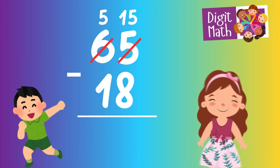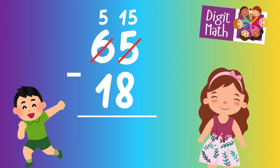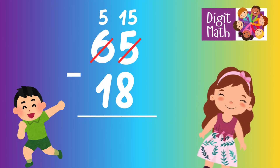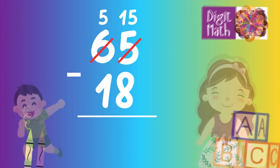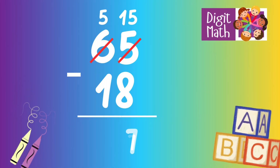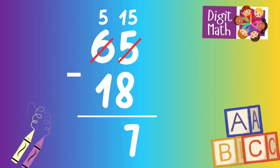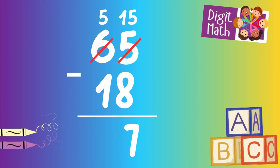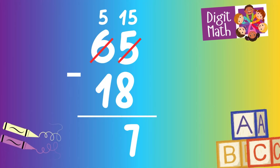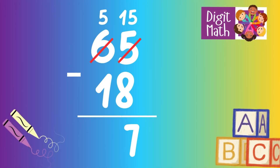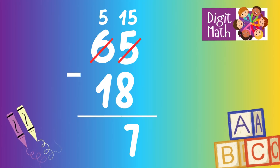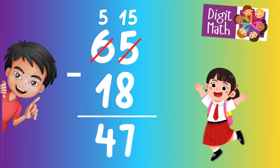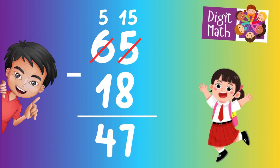Now we have 15 in the Units column. Subtract 8 from 15, which equals 7. In the Tens column, we now have 5. Subtract 1 from 5, which equals 4. So the final result is 65 minus 18 equals 47.